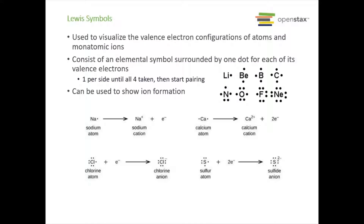Lewis symbols are used to visualize the valence electron configurations of atoms and monatomic ions. They consist of an elemental symbol surrounded by one dot for each of its valence electrons. There's one dot per side until each of the four sides have been taken up, and then from there we start pairing the electrons off. We can also use it to show ion formation.